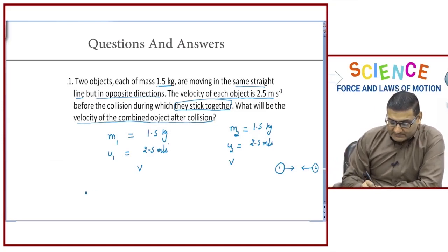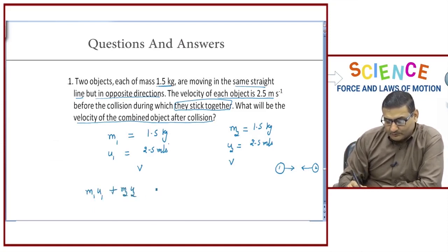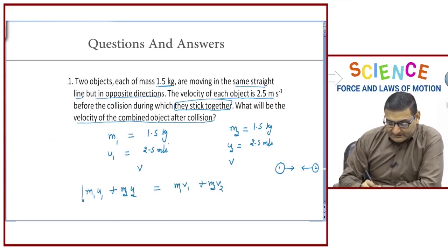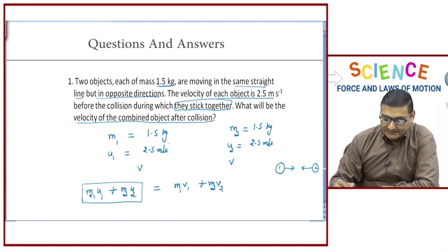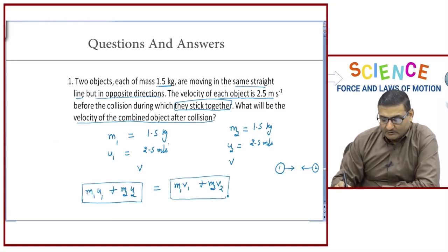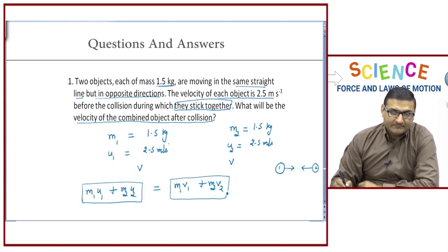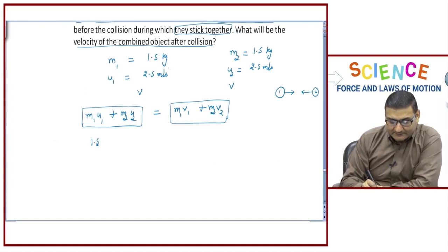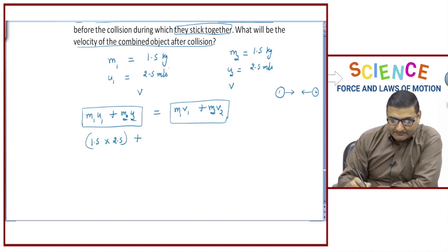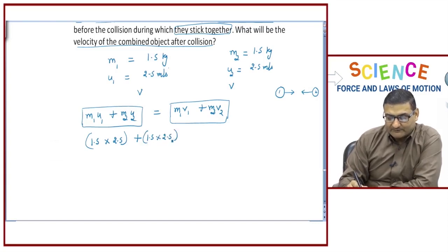The law of conservation of momentum states that m1·u1 + m2·u2 = m1·v1 + m2·v2. This is the total initial momentum of both objects before the collision, and the right side is the total final momentum after the collision. Placing values: 1.5 × 2.5 + 1.5 × 2.5.